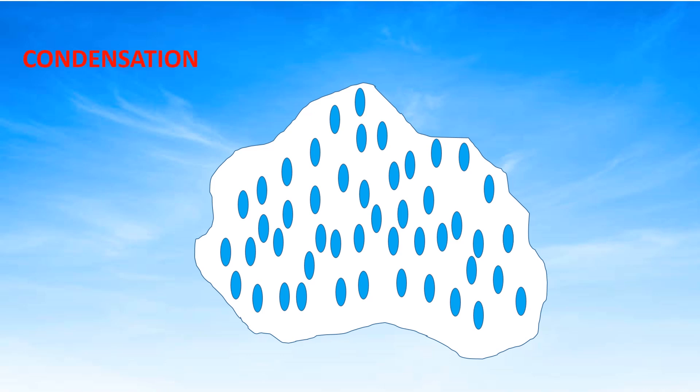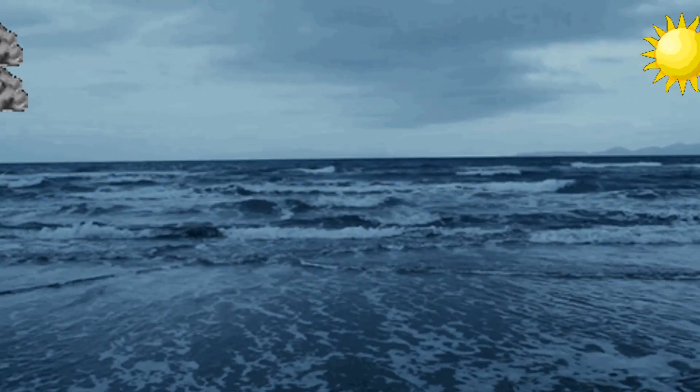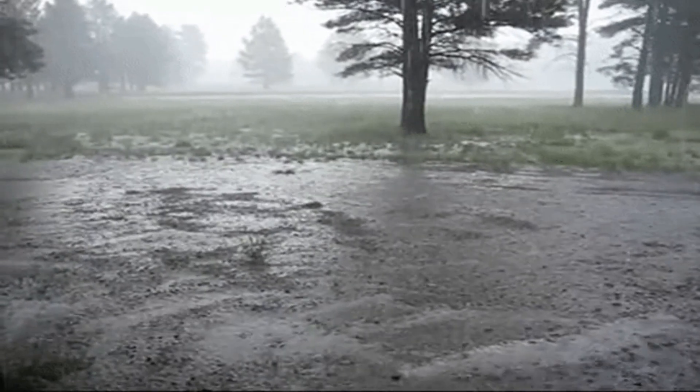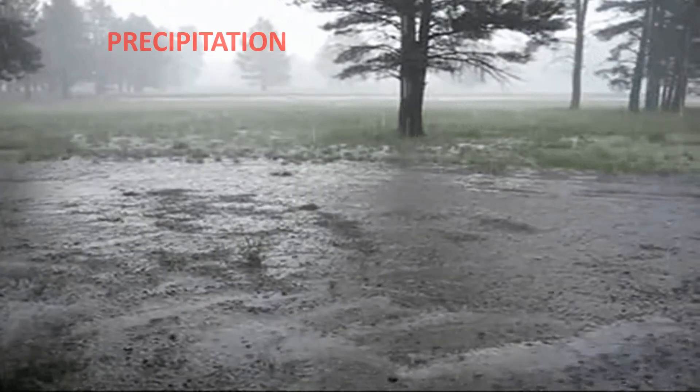This process of changing water vapor into water droplets is called condensation. The clouds are carried here and there by the wind. The water droplets in the clouds join together to form bigger drops. When the water droplets get too large and heavy, they fall to the ground because of gravity. This water droplets falling to the ground as rain is called precipitation.